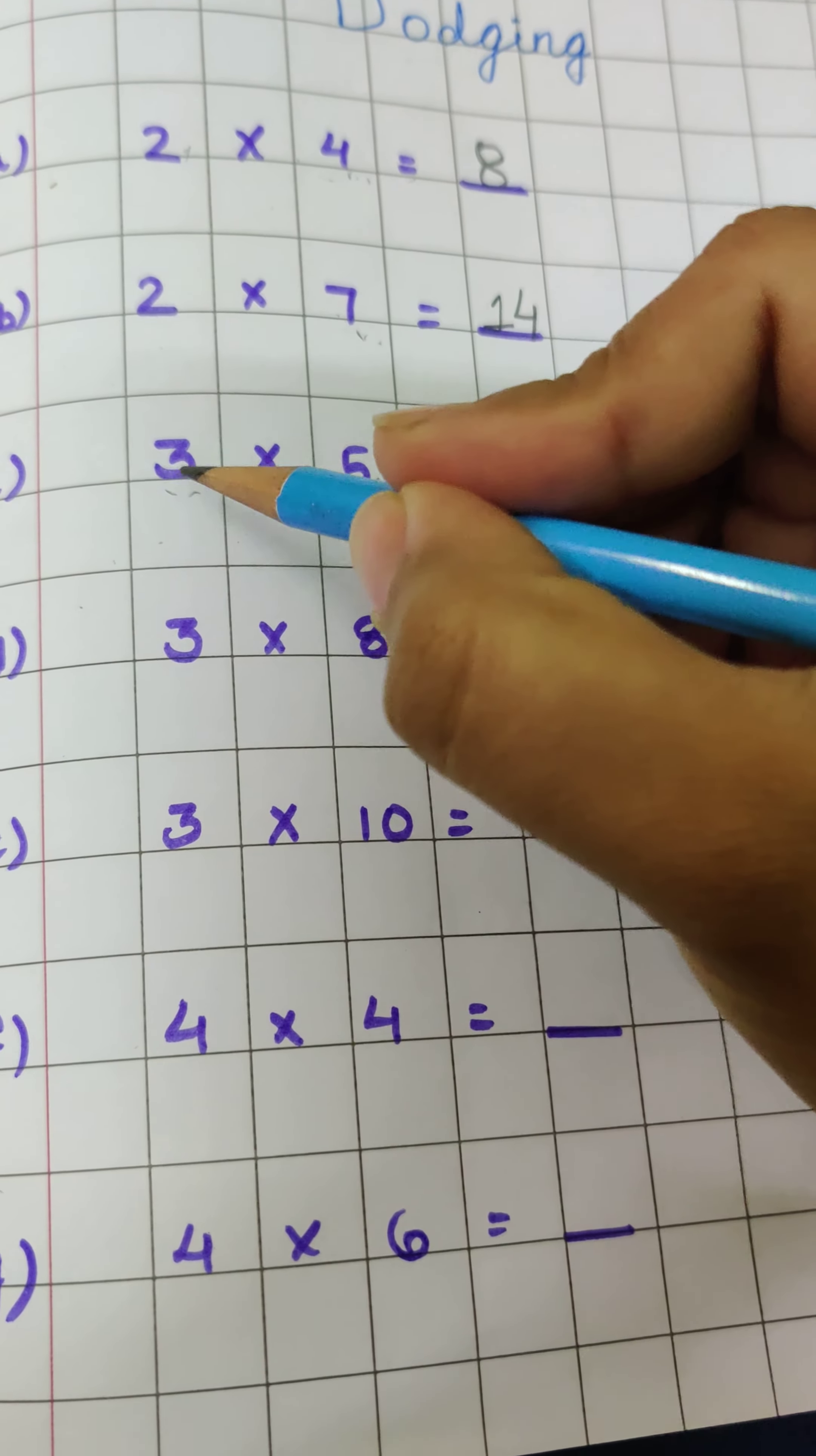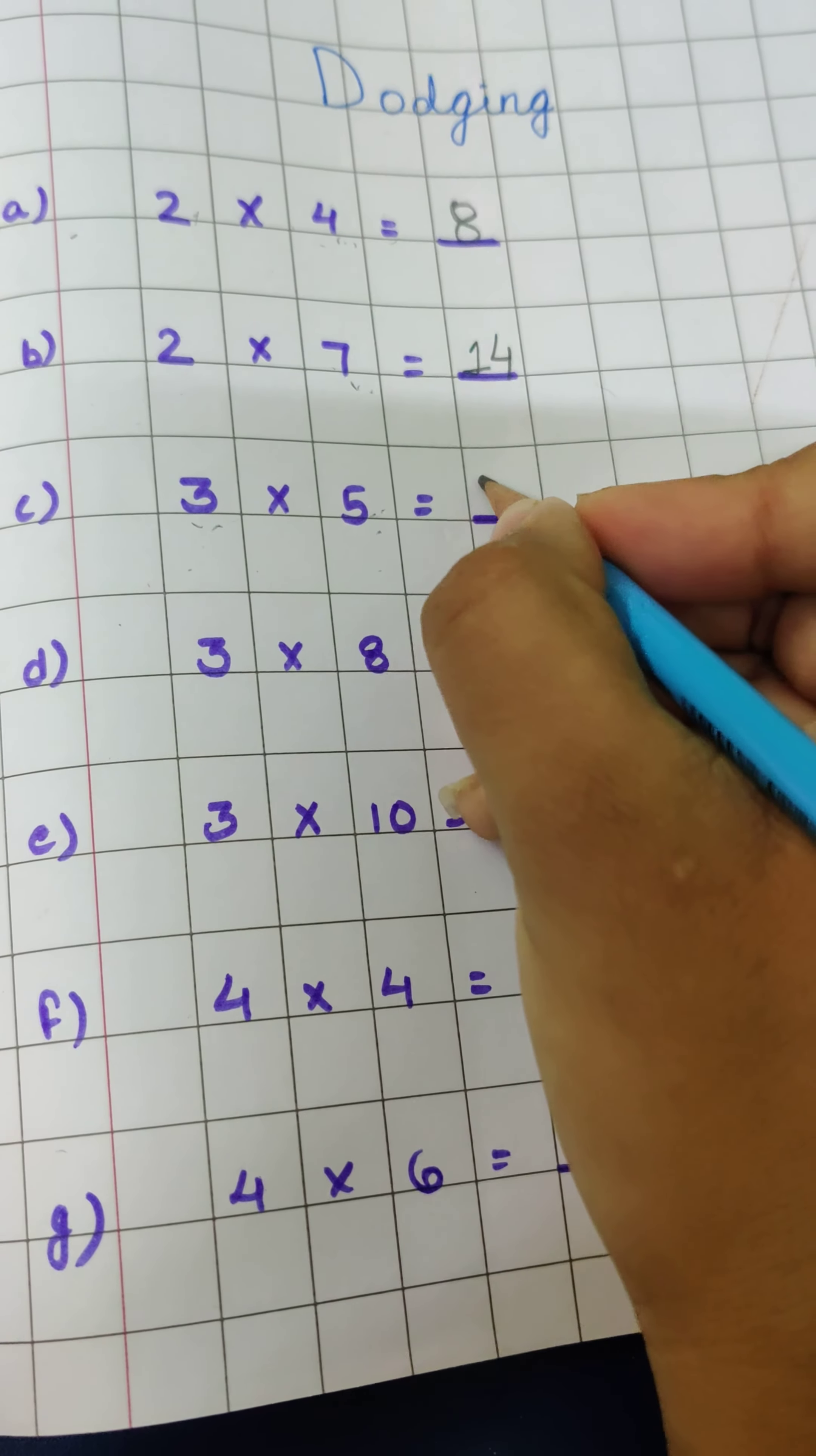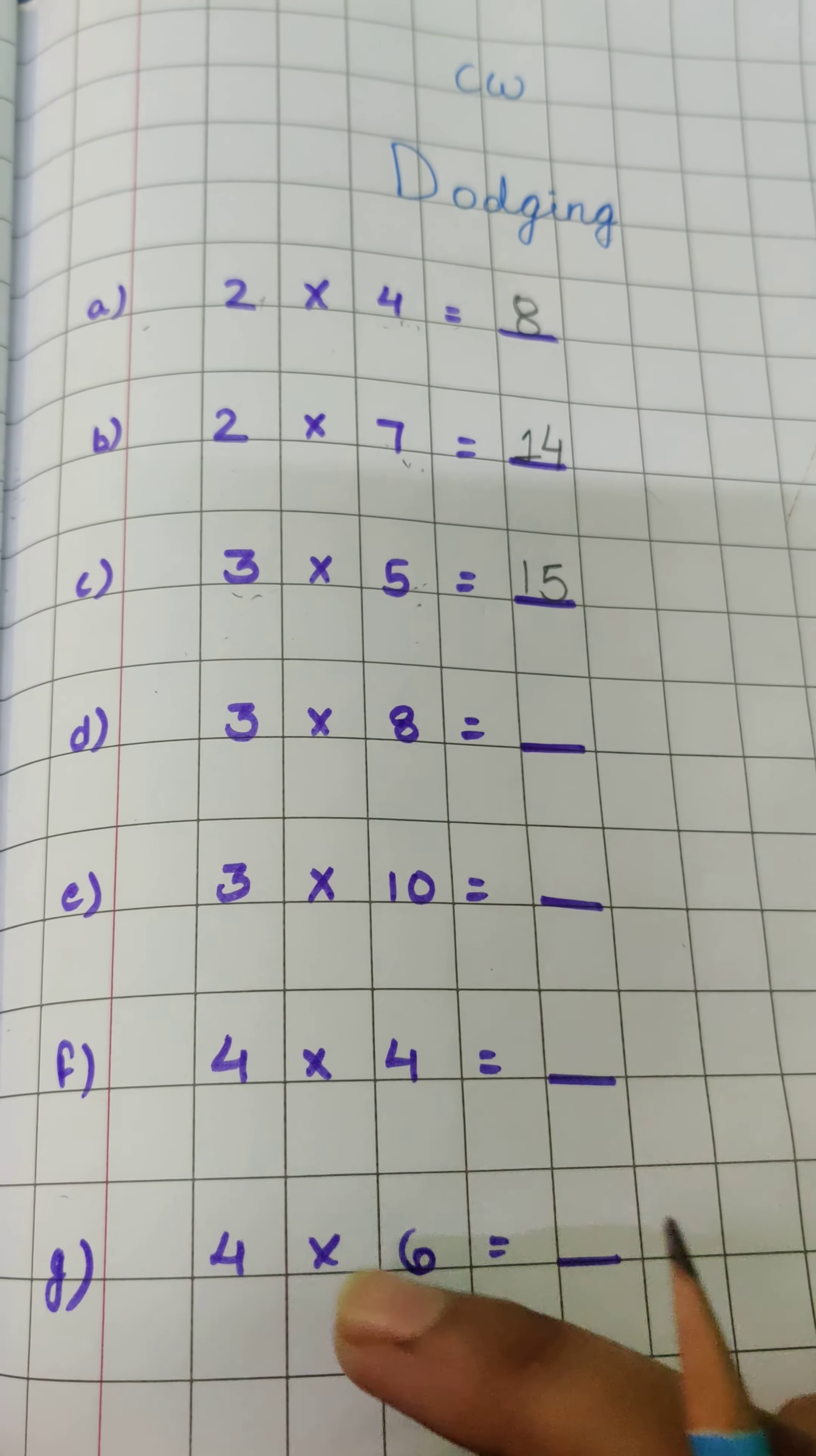So we will recite the table 3 up to 5. 3 ones are 3, 3 twos are 6, 3 threes are 9, 3 fours are 12, 3 fives are 15.